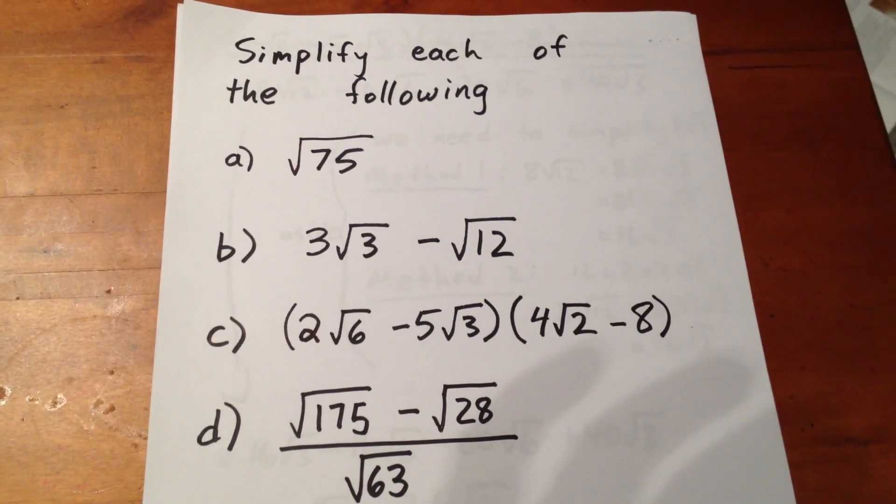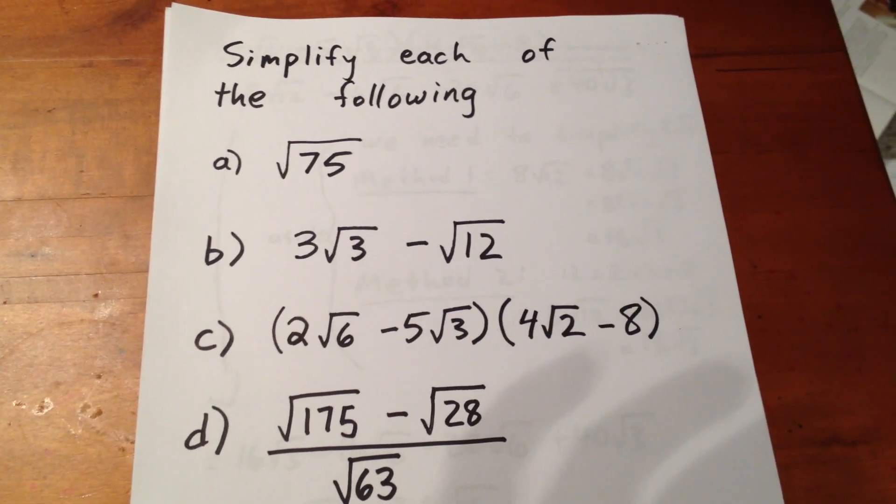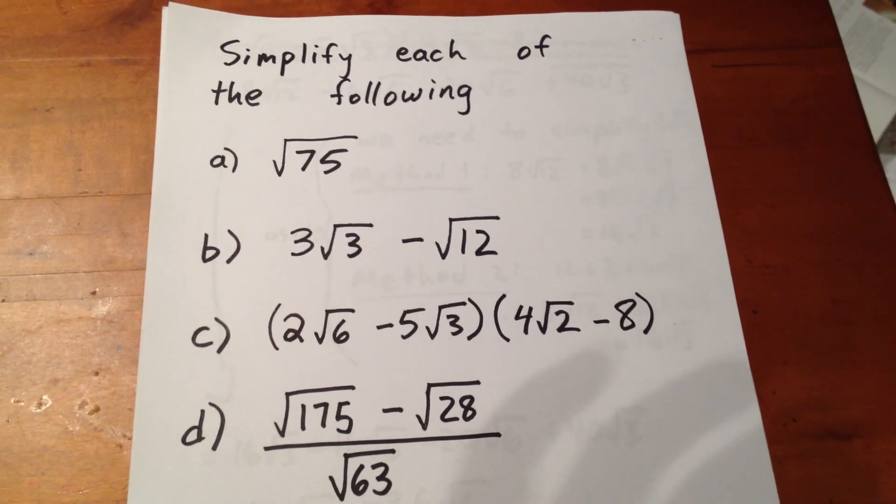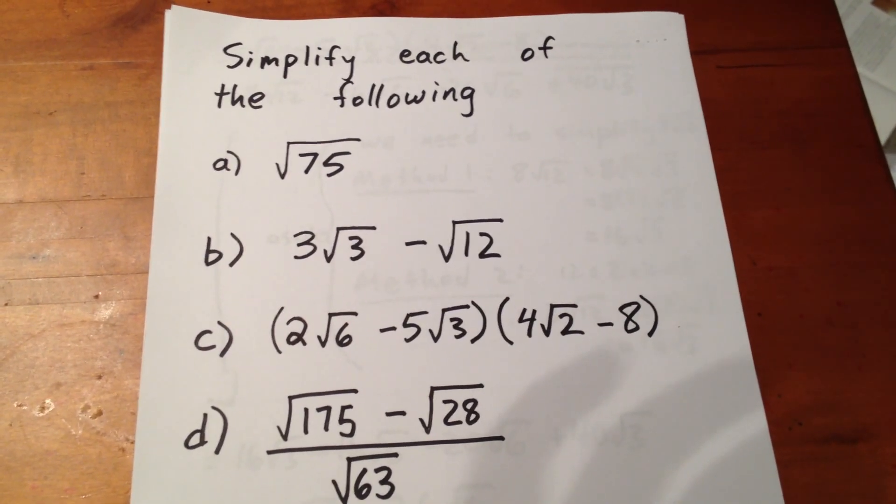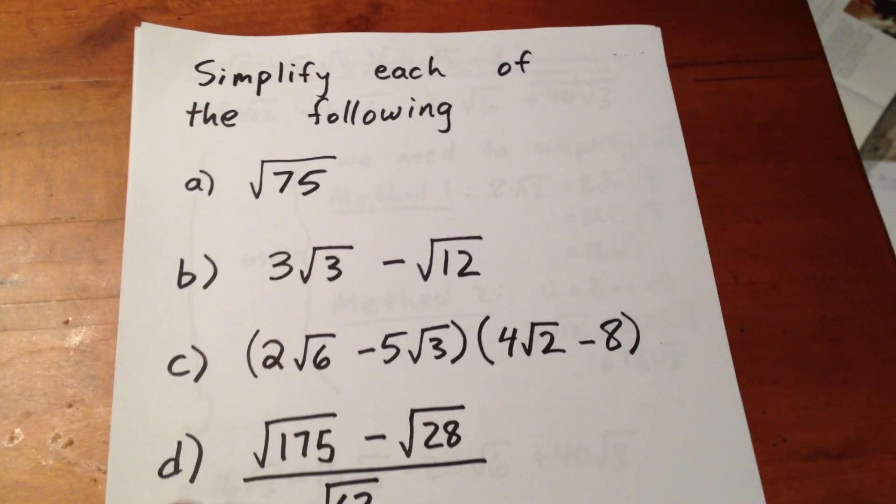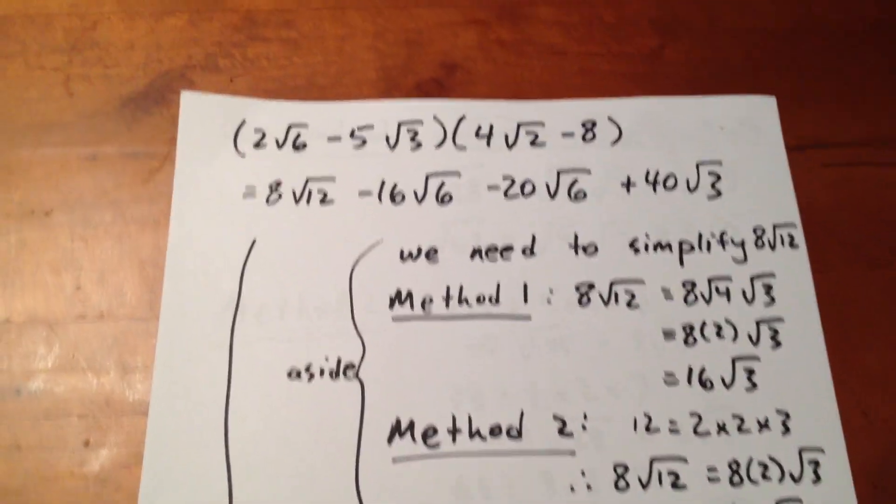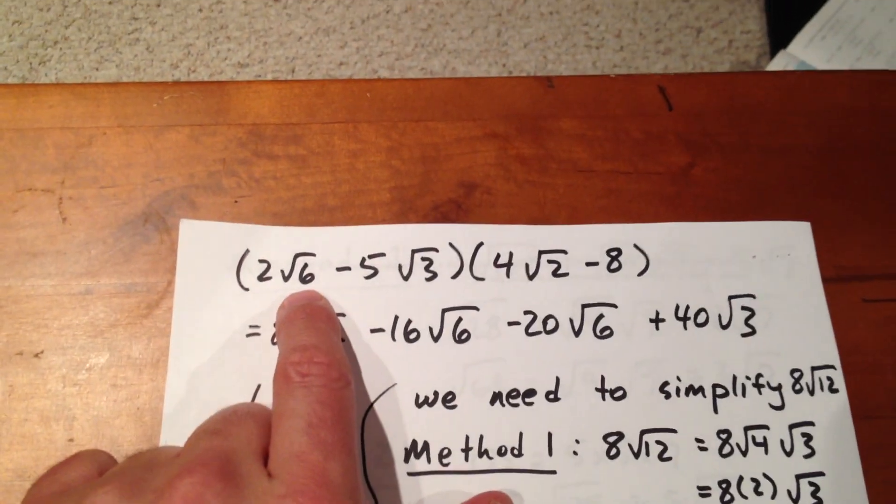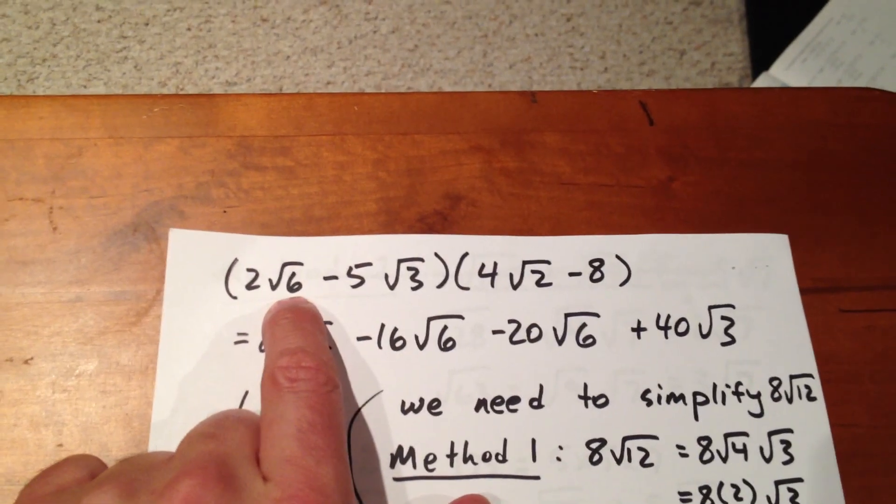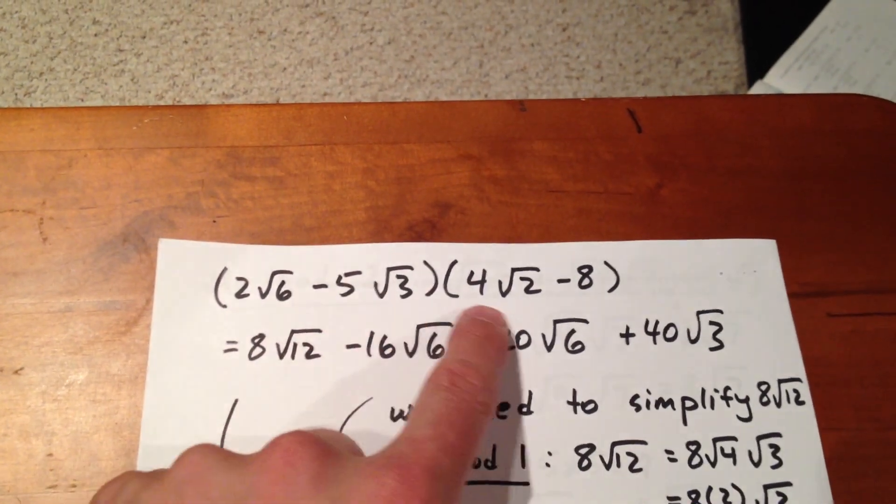We're going to simplify expression C: (2√6 - 5√3)(4√2 - 8). Well, we'll do it one of two ways. First of all, what we have to do is expand binomial times binomial.